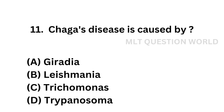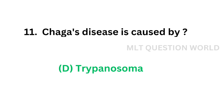Question number eleven: Chagas disease is caused by — Option A: Giardia, Option B: Leishmania, Option C: Trichomonas, Option D: Trypanosoma. The correct answer is Option D — Trypanosoma. Chagas disease is caused by Trypanosoma cruzi.